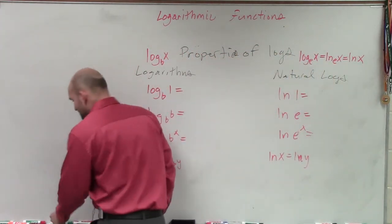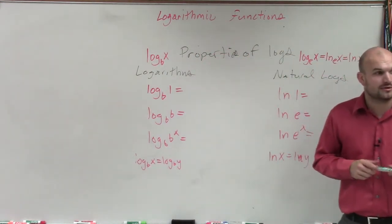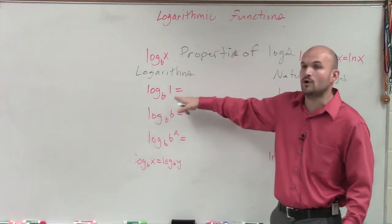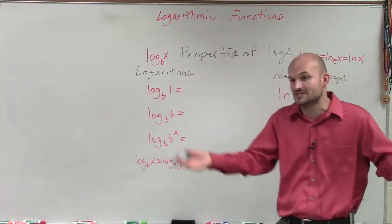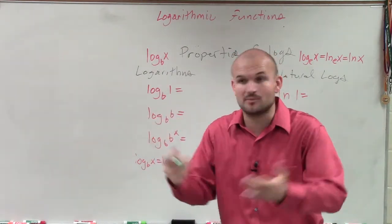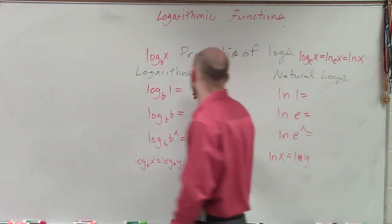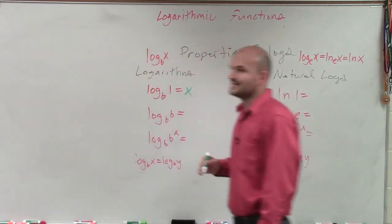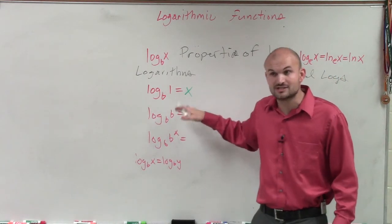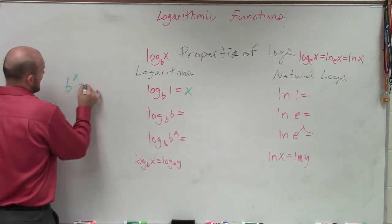So to best understand these logarithm properties, what we can do is convert them each to exponential form. Right now, I say log base b of 1 equals something. We don't know what that is. So if we don't know what something is, we can always represent it with what? A variable. So what variable do you want to choose? x. So if I set that equal to x, now I have a logarithmic equation. All logarithmic equations I can rewrite in exponential form. So therefore, b to the x equals 1.